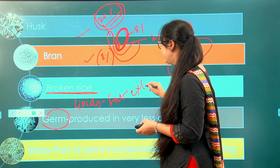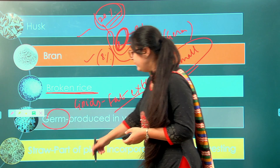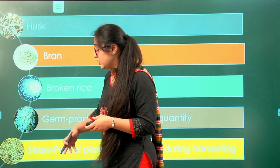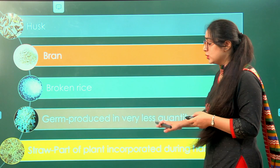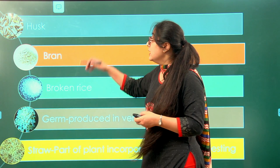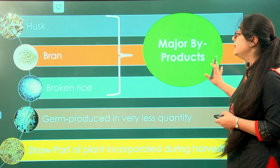Then we have straw, which is the part of the plant incorporated during harvesting. It can be utilized as cushioning to give a fluffy structure, or given to animals as feed. In today's lecture we will not focus on germ and straw since they are produced in very tiny quantities. The major by-products we focus on are husk, bran, and broken rice, as they are produced in very large quantities and should not be wasted.